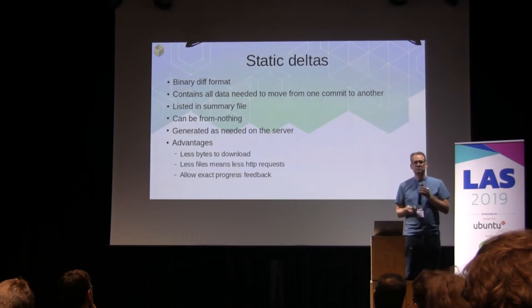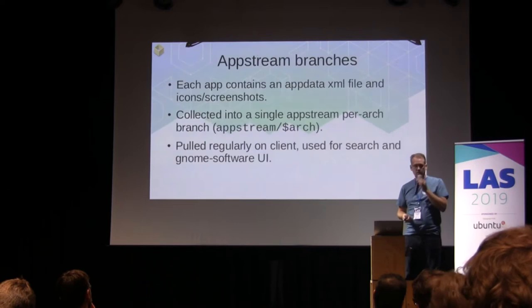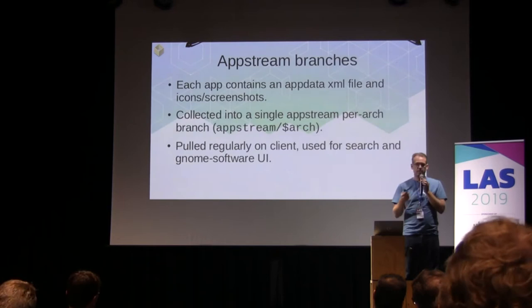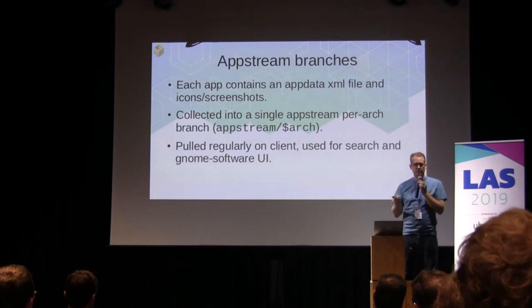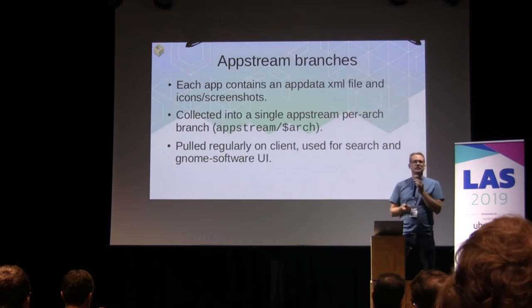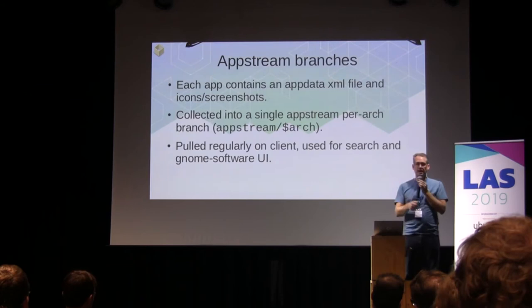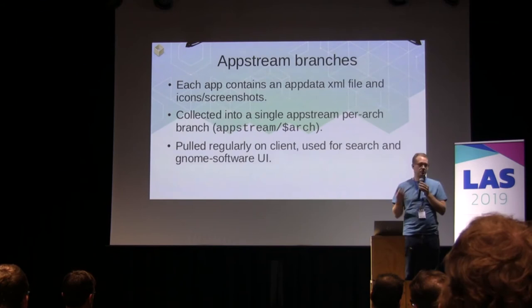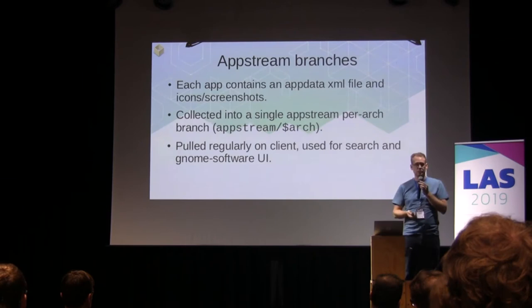We also have AppStream branches. AppStream is a metadata format for describing apps — descriptions, versions, screenshots, all that kind of stuff. Each app has one. While updating the repository, we extract all of them from all the apps and put them into one large XML file. Each individual one is called AppData, and we combine them into AppStream, which is the XML for all things, plus icons and whatnot. This is what app stores use for showing information — the web app, KDE Discover, GNOME Software all use this. It's also already used for packages like .deb and RPMs. It's important to be aware that we have to regenerate this branch whenever something changes.